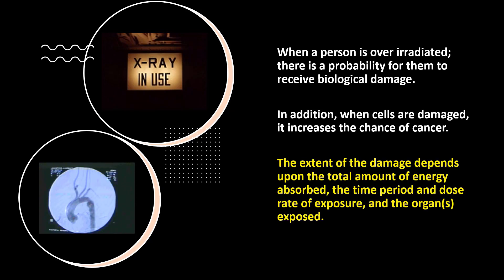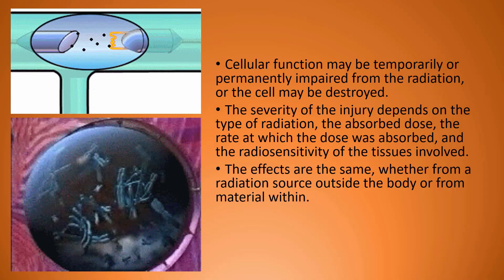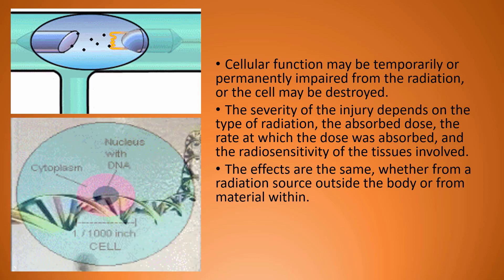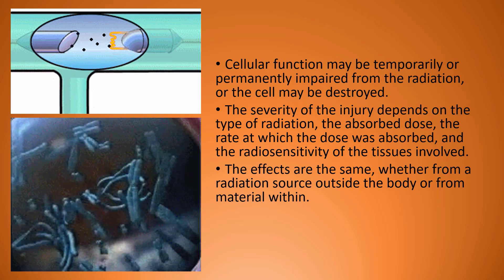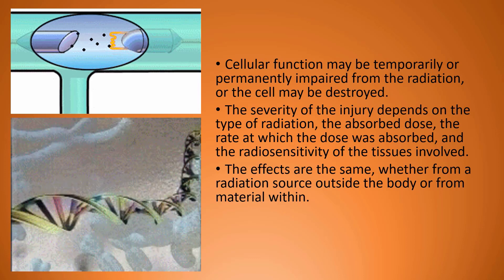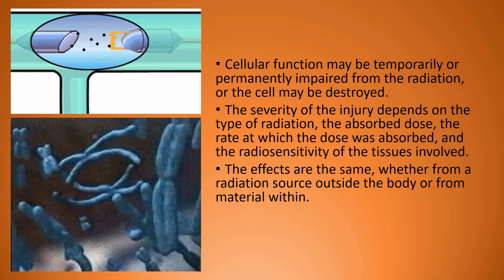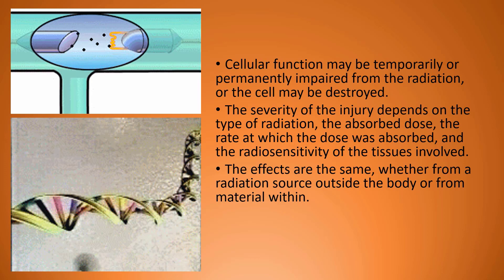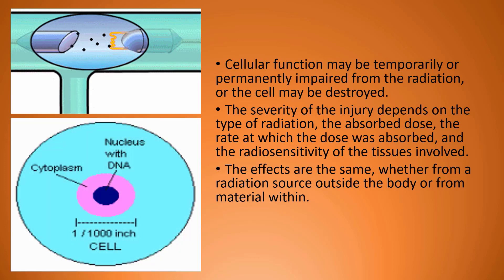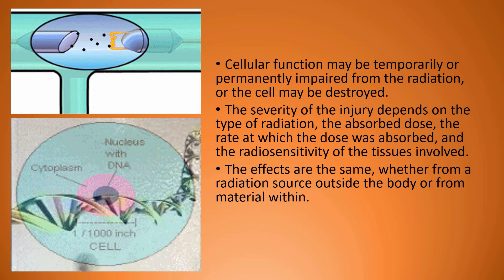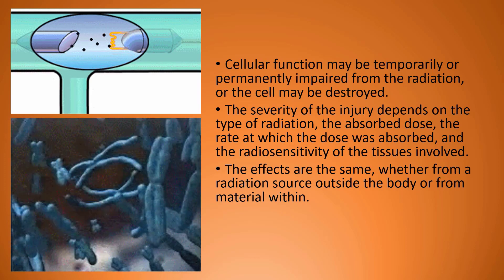The extent of the damage depends upon the total amount of energy absorbed, the time period and the dose rate, and the organ's sensitivity to exposure. The severity of the injury depends on the type of radiation, the absorbed dose, and the rate at which the dose was absorbed. If we have an acute absorption — meaning all at once — it is much more harmful than a large absorbed dose over several fragments of time. Radiosensitivity of the tissue is also involved. The effects are the same whether from a radiation source outside the body or from ionizing radiation material that was ingested in the body.